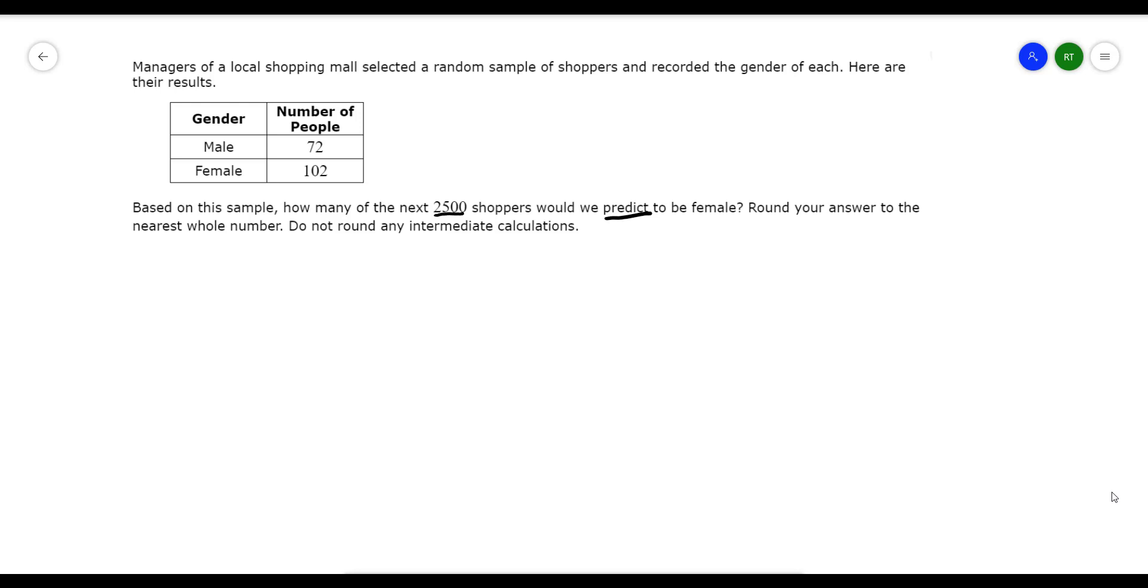And here's the formula you can use for this. Find the probability of a female. So you're going to basically do the female out of the total number of people surveyed. And you're going to take that answer and multiply it with 2,500, which is the number of shoppers we're going to predict out of that sample, how many are going to be female.